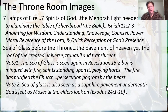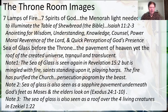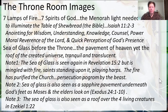The sea of glass is also seen as a sapphire pavement in Exodus underneath God's feet as Moses and the 70 elders look on at the mountain, and then they begin to hear the trumpet blaring. It's crystalline and translucent. The sea of glass is also seen as a roof over the four living creatures in Ezekiel 1:22. The sea of glass has several allusions in the Old Testament — that's the metaphor.